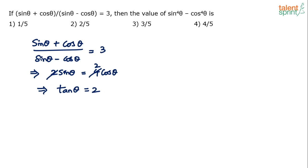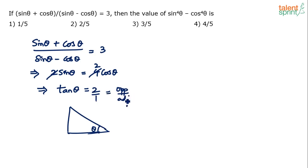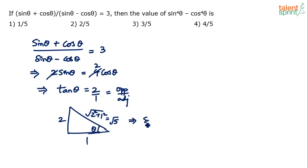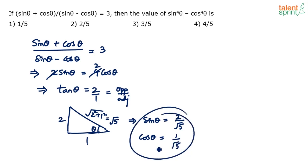With tanθ = 2, construct a right-angled triangle: opposite side = 2, adjacent side = 1, hypotenuse = √(2² + 1²) = √5. Therefore sinθ = 2/√5 and cosθ = 1/√5. Substitute these values into the expression.